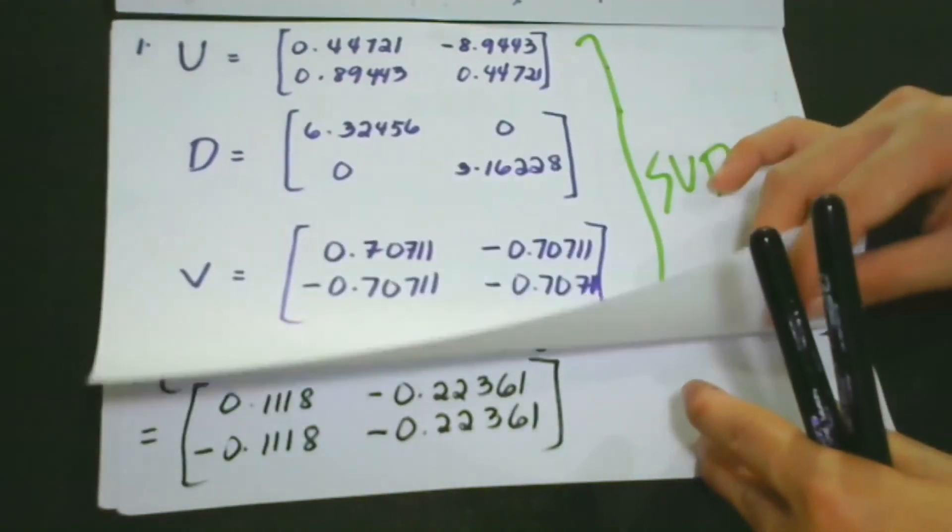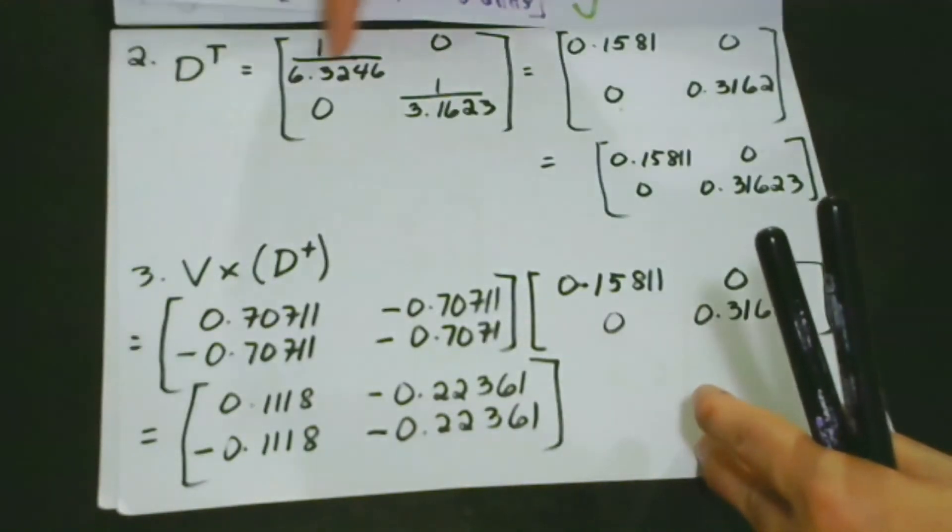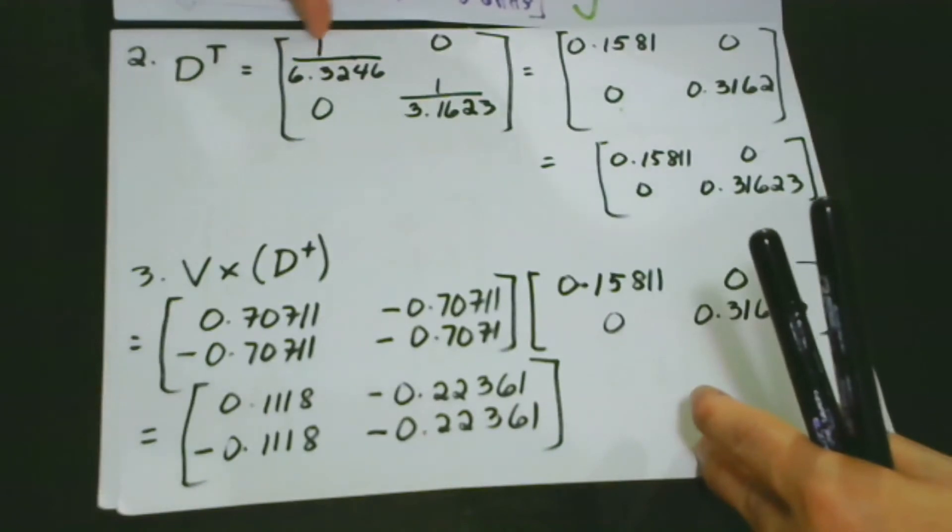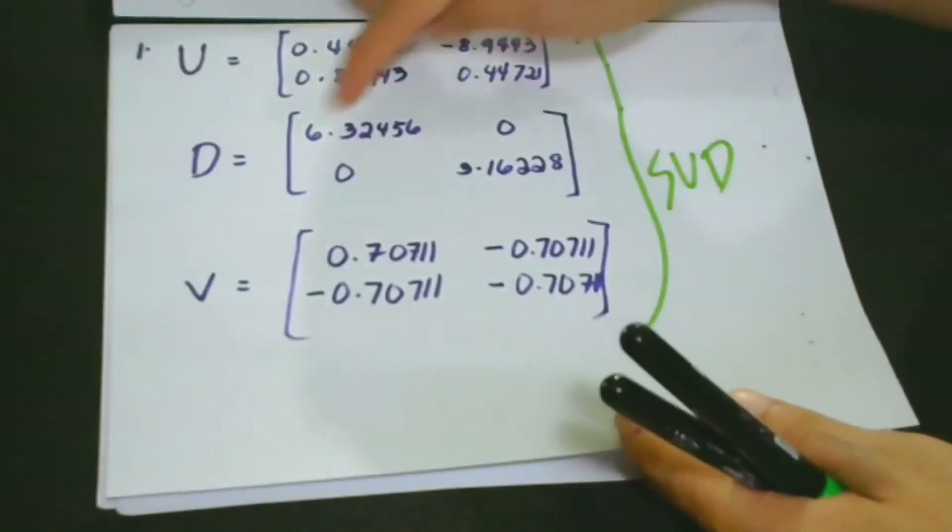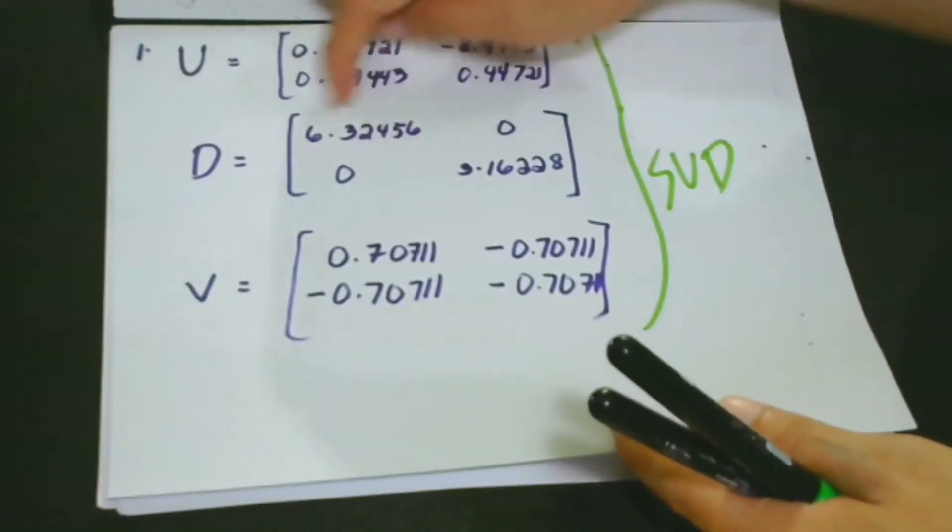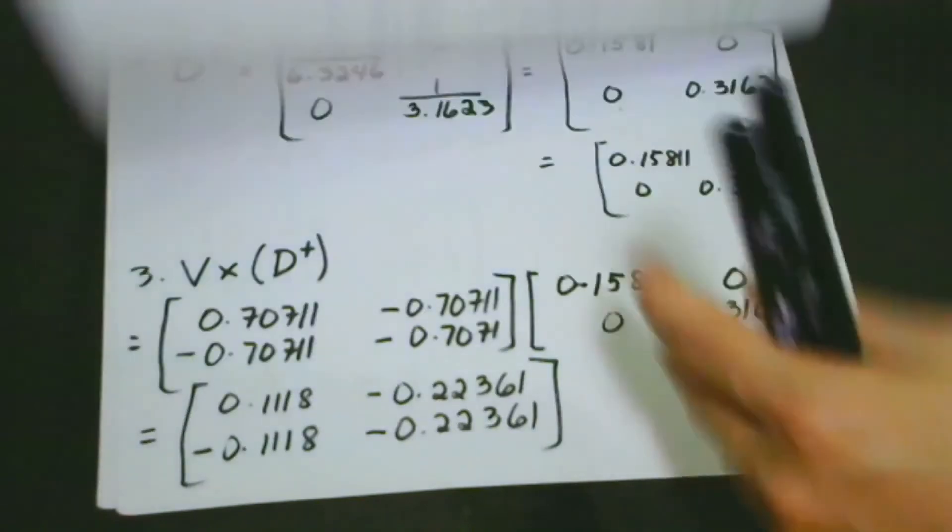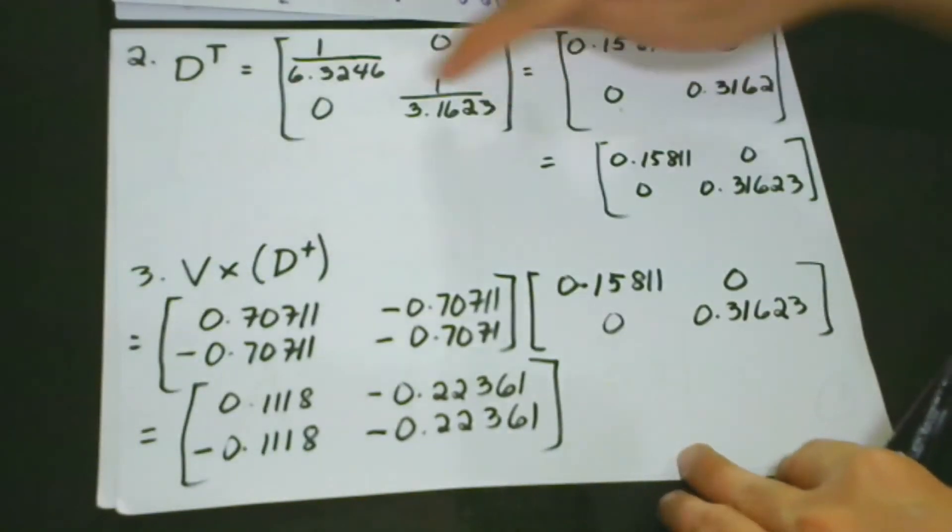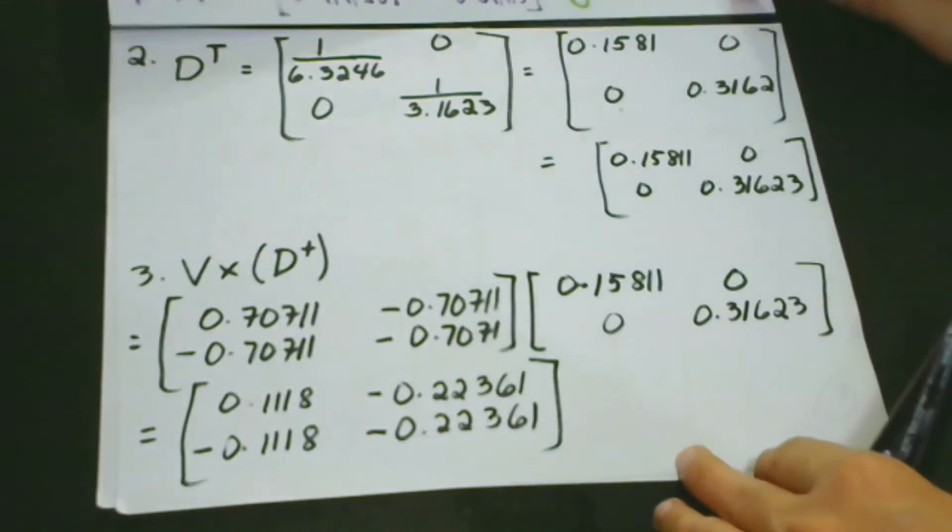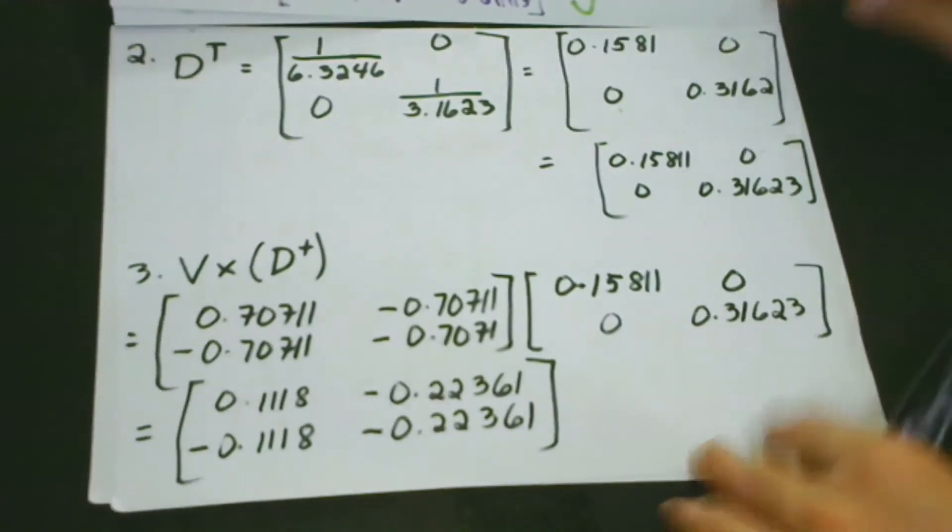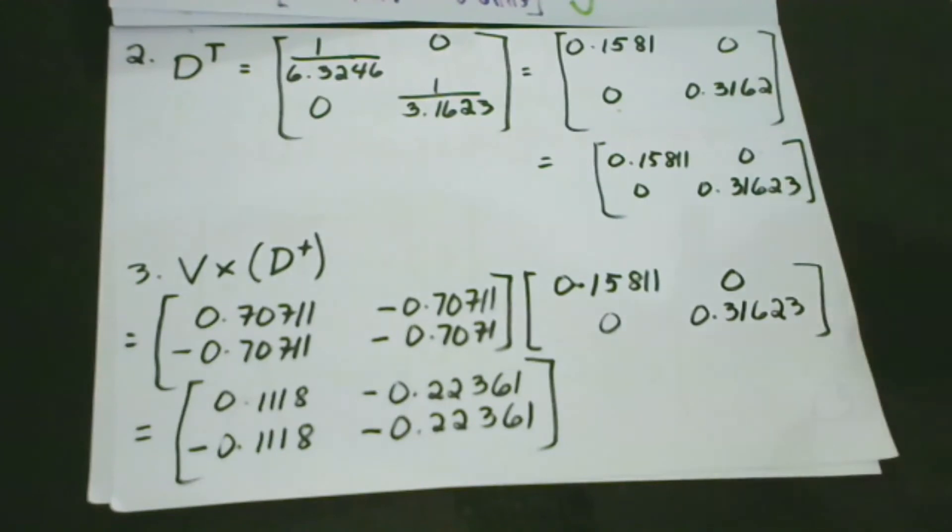And to get the reciprocal, it's very easy. We only have to make a fraction wherein one is the numerator. And then this one, which used to be the numerator, now becomes the denominator. And also with this one. And then, what we do here is that we are going to take the transpose. So let's take the transpose.